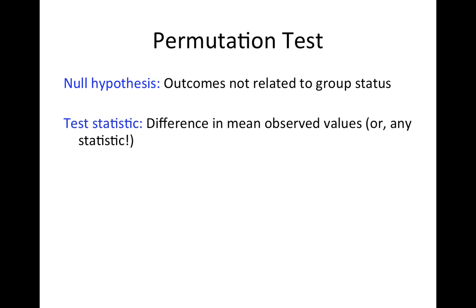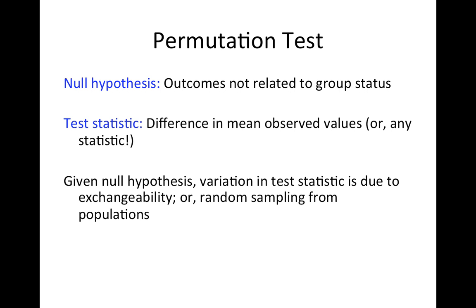The test statistic could be any summary of the data, but for example, the difference in mean test scores between males and females. Given the null hypothesis — that test score and gender have nothing to do with each other — the variation in the test statistic, the fact that there are multiple differences in means we could obtain, is no longer related to the randomization. We can no longer say that if we had randomized each person to be male or female differently, we would have had a different difference in means. That's not true anymore because we didn't actually randomize.